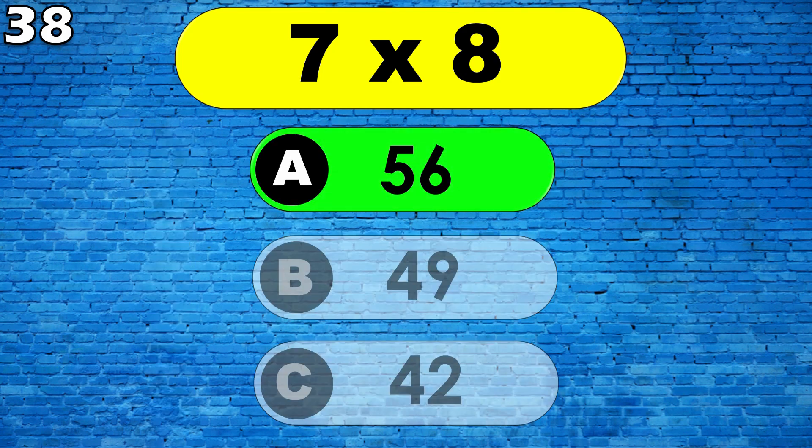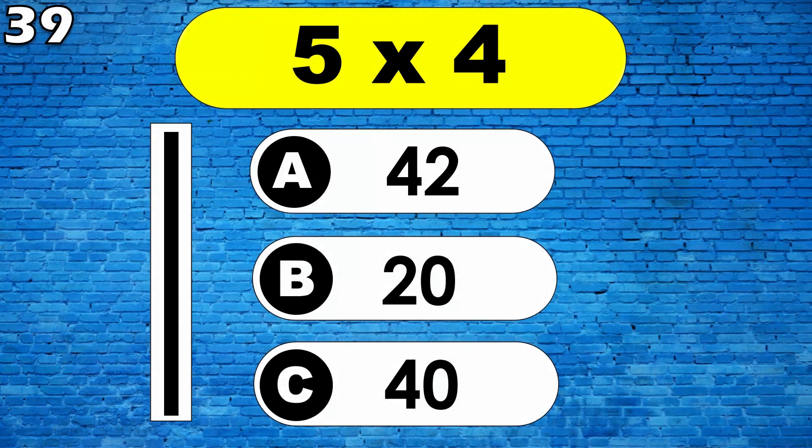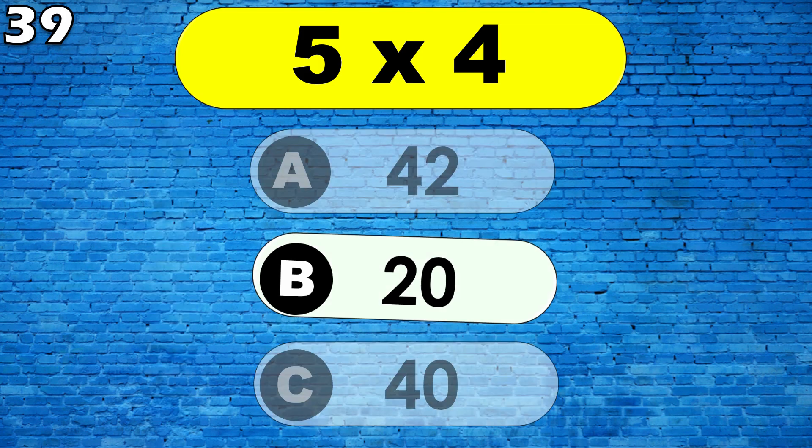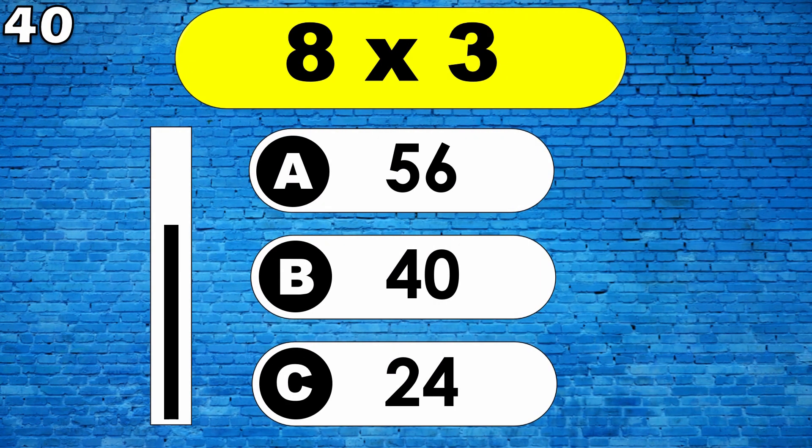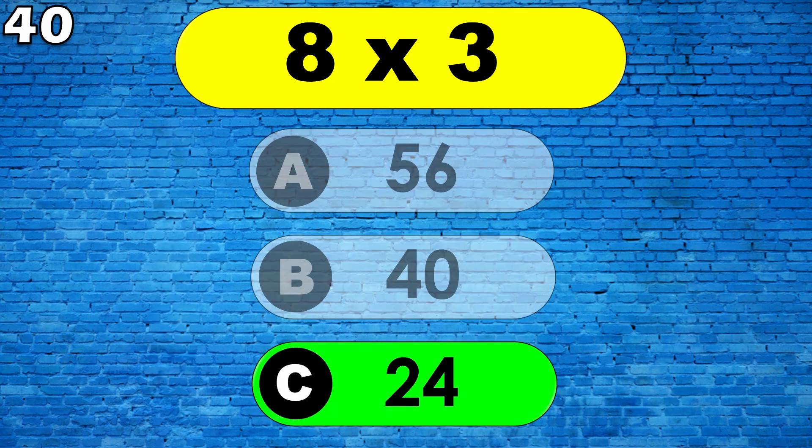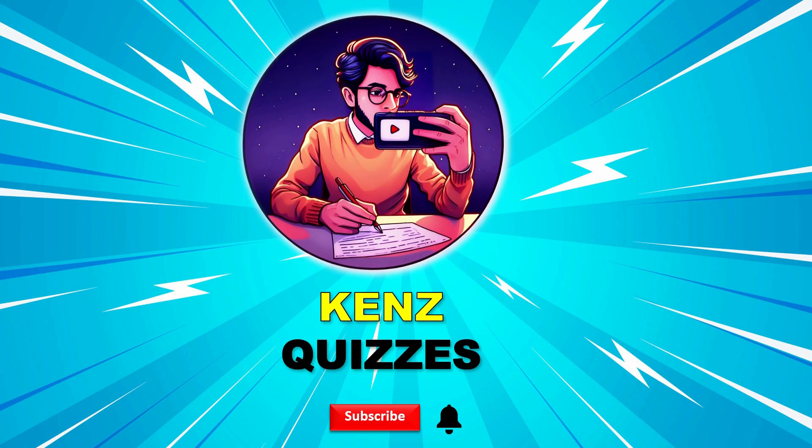Five fours are twenty. Three sixes are eighteen. Ten eights are eighty. Thank you.